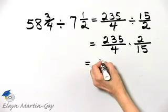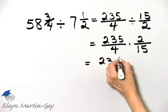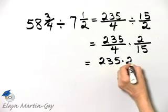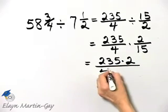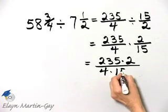And now we're multiplying. So it's numerator times numerator over denominator times denominator.